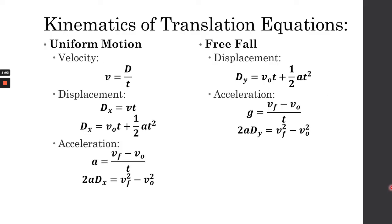Before we begin our discussion on projectile motion, let's first be reminded of the kinematics of translation equations we've discussed so far. In lesson 6.2, we started our discussion on uniform motion — these are the kinematic equations we use when solving for uniform motion along a straight line. Velocity basically equals distance over time. This is how we get displacement, and this is for acceleration. We also previously discussed freefall, where we can compute displacement using these equations.